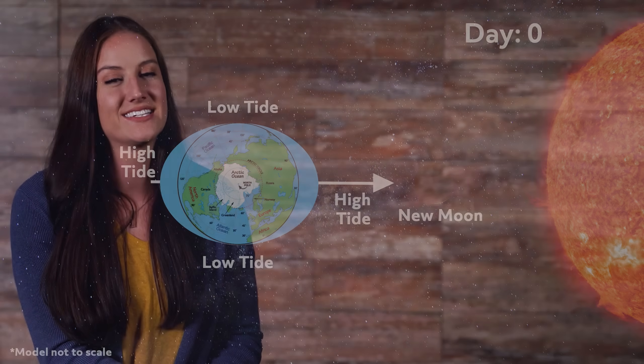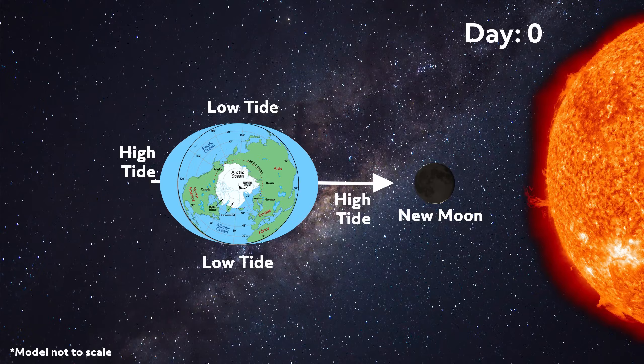The moon orbiting causes some things to happen on Earth. To understand what is going on, we have to bring in the Sun. The moon starts out directly in front of the Sun. From Earth, it looks like the moon is invisible, because the light is shining on the opposite side of the moon — the part that we can't see. When the Earth, moon, and Sun are directly aligned like this, something happens: spring tides.